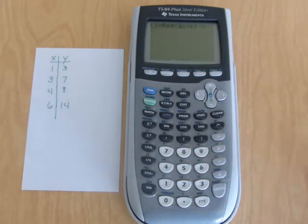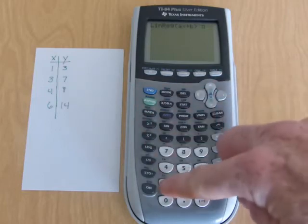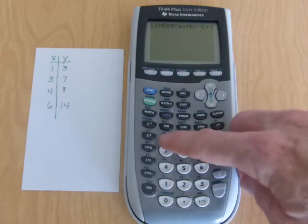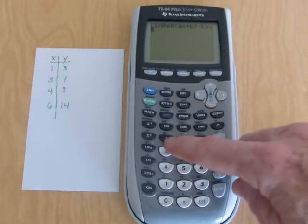So I hit number 4. Up pops linreg ax plus b. Now I'm going to hit second and the number 1 which is L1 to tell it where my X list is. I'm going to hit a comma with the button above the 7.